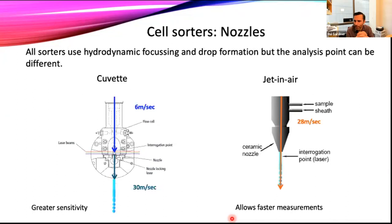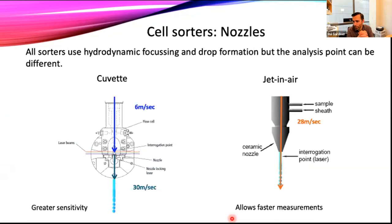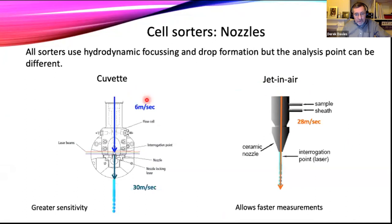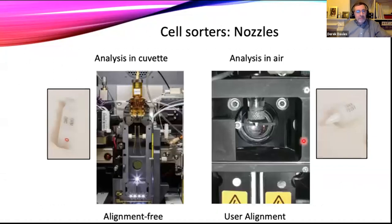Question: how are charges deposited on droplets in a four-way sort? It's exactly the same way as in a one-way sort — you just vary the charge. The cytometer decides which way you want particular populations to go: it gives the biggest charge to the population going to the left, a slightly lower charge of the same polarity to another population going left, and does the same on the right-hand side. Adam's follow-up: where is the piezoelectric crystal? It's basically above the flow cell — slightly different on different cytometers — sending that sound wave through the stream.